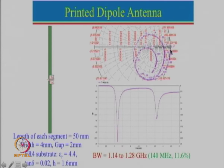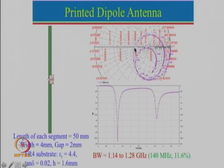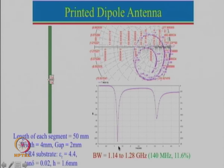At lower frequency we can see that it is capacitive, then it becomes real, then it becomes inductive, then capacitive — basically up to this point the length is less than lambda by 2. Then this is up to about lambda, and then another resonance is coming which is around when the length is about 3 lambda by 2. So this is the first resonance and this is the third harmonic. For the second harmonic the input impedance is very high, so that is why it is not very prominent.